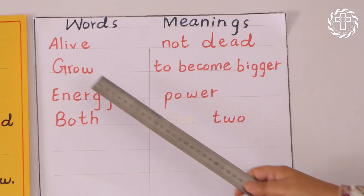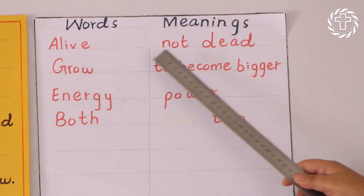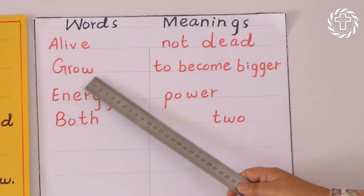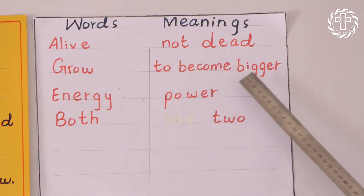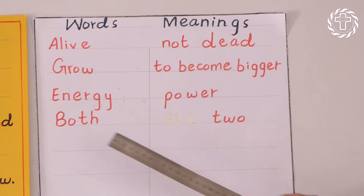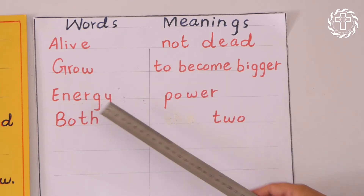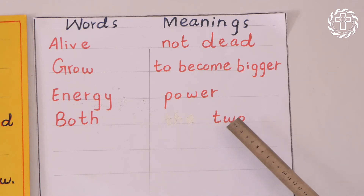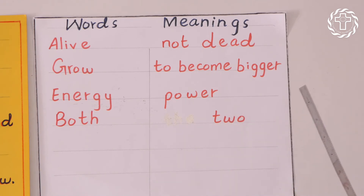These are the words and their meanings. Alive means not dead. Grow means to become bigger. Energy means the ability to do work.